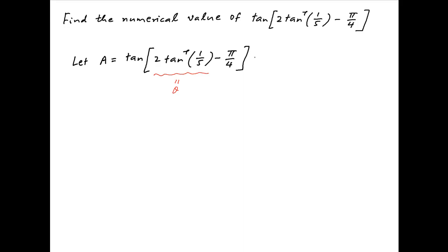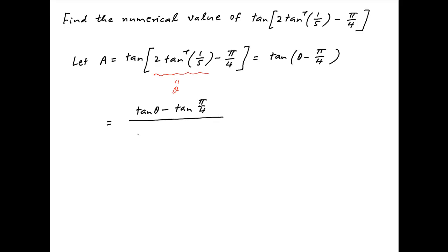Therefore a can be written as tan of (θ minus π upon 4). This is equal to tan θ minus tan(π upon 4), divided by 1 plus tan θ times tan(π upon 4).